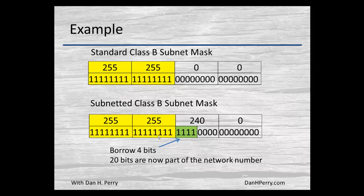In this case we have borrowed 4 bits from the host portion, giving us now 20 bits for the network and only 12 bits for the host. By borrowing 4 bits, we now have more networks, but they're smaller.